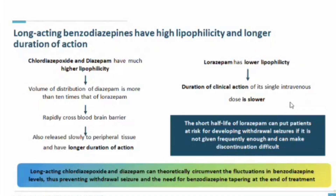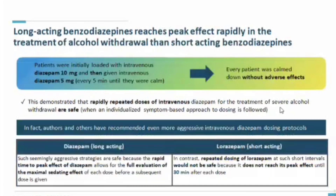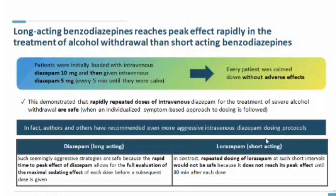Long-acting chlordiazepoxide and diazepam can theoretically circumvent fluctuation of benzodiazepine levels, preventing withdrawal seizures and the need for tapering at end of treatment. Long-acting benzodiazepines reach peak effect more rapidly in alcohol withdrawal treatment. Patients were initially loaded with intravenous diazepam 10 mg, then given 5 mg of diazepam every 5 minutes until the patient calmed down — every patient improved without adverse effects, demonstrating that rapid repeated intravenous diazepam doses for severe alcohol withdrawal are safe.